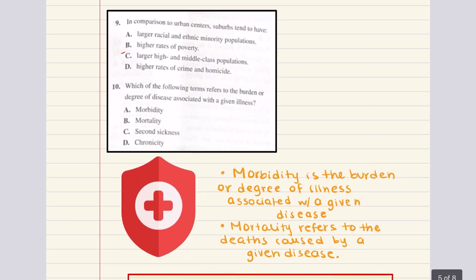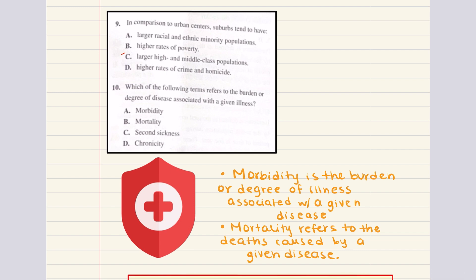Problem nine: in comparison to urban centers, suburbs tend to have blank. Suburbs tend to have larger high and middle class populations than urban centers. Urban centers tend to have larger low socioeconomic status populations than the suburbs, due in part to the increased mobility seen in high and middle class populations, which permits their migration into the suburbs — sometimes to get away from mixed socioeconomic status neighborhoods. The correct answer for nine is C.